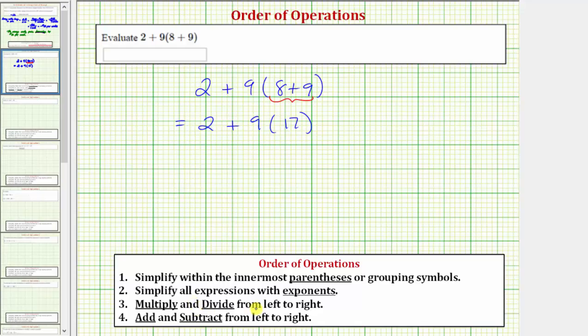Step three, we multiply and divide from left to right. Notice how step four, we add and subtract from left to right. So this is telling us that we're always going to multiply and divide from left to right before we add and subtract from left to right.